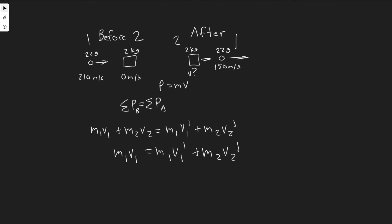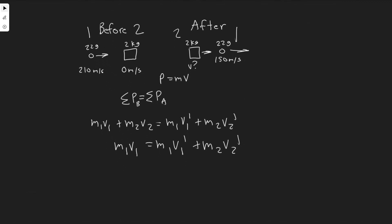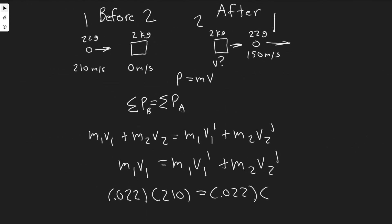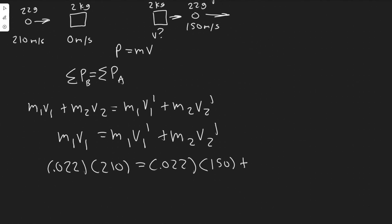And so now we just want to plug in. So 22 grams, that is going to be 0.022 kg. Keep in mind we got to convert it to kg. And then we know the initial velocity is 210. And then it's going to be equal to the mass of the bullet again, which is 0.022. And then its new speed is 150 meters per second. Let me zoom in a bit. 150 plus the mass of the block after, which is still 2 kilograms times its velocity, which we don't know. So I'm just going to write V, just keep in mind it's V2 prime.